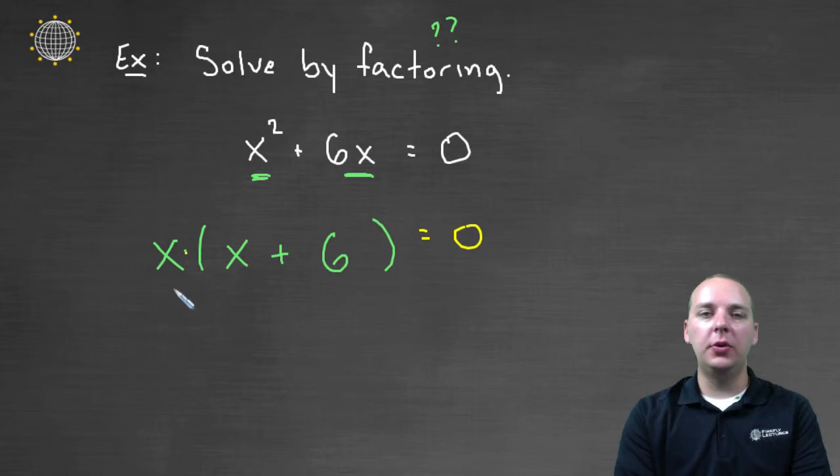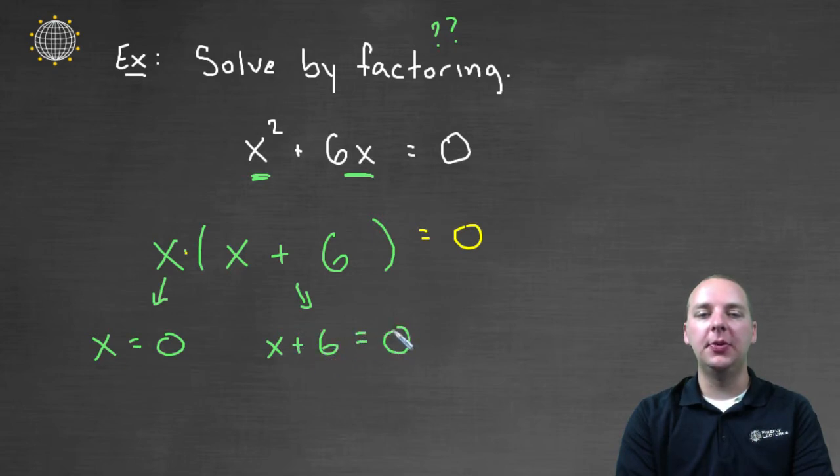What we'll do next is our natural next step. We'll set each of these individual factors equal to zero. So we'll have x = 0 and x + 6 = 0.